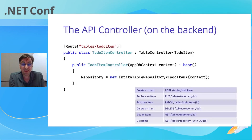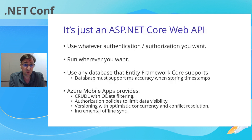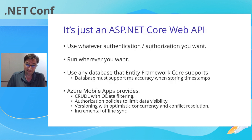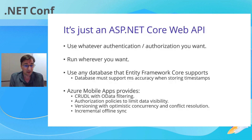The important thing to note here is that this is just an ASP.NET Core Web API. So if you want to use authentication and authorization, you can do that. If you want to run it on your local machine or in a container, you can do that. We can use any database that Entity Framework Core supports, as long as the database supports millisecond accuracy when storing timestamps — SQLite, unfortunately, doesn't meet these requirements. Azure Mobile Apps provides you with CRUDL, authorization policies out of the box to limit data visibility, versioning, conflict resolution, and incremental offline sync.